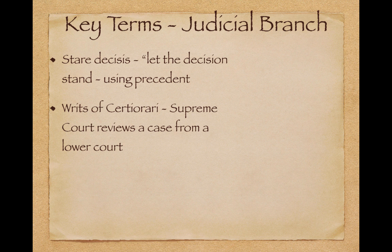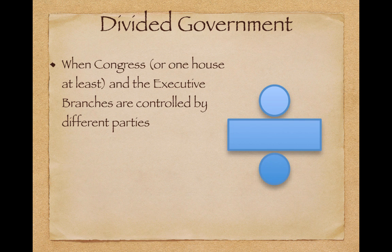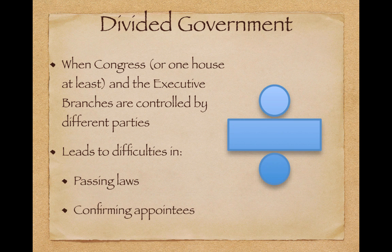Writ of certiorari is when the Supreme Court reviews a case from a lower court — the Supreme Court saying to a lower court, 'we want to take a look at that case ourselves.' Original intent is looking at the Constitution based on the intent of the framers — how would people like Alexander Hamilton view a case? That's the original intent doctrine. Divided government is when Congress (or at least one house) and the executive branch are controlled by different parties — for example, a Republican in the White House but Democrats controlling Congress. This leads to difficulties in passing laws and confirming appointees.